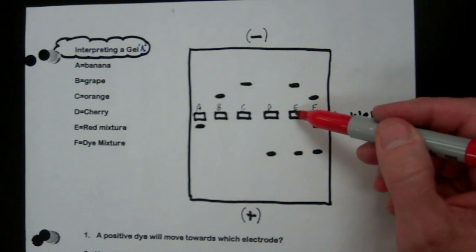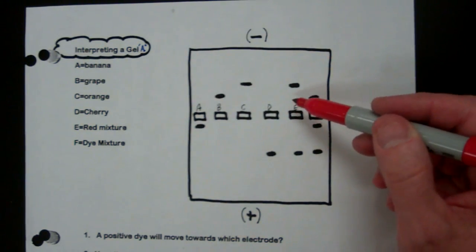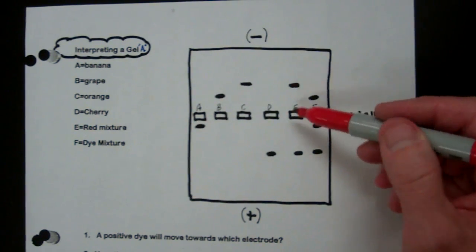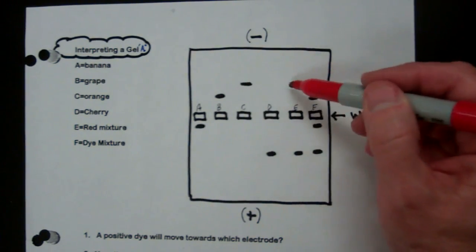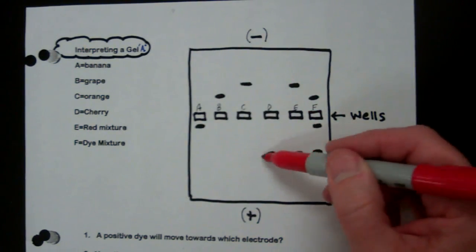E is a red mixture, if you look at your list. So your job is to figure out what is in that mixture. And you do that by looking at how far the molecules got. And these two are the same molecule. These two are the same molecule.